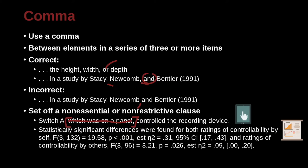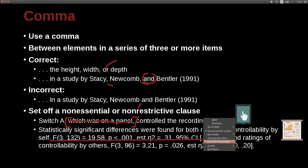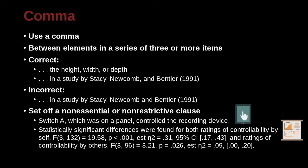Here's another example. Statistically significant differences were found for both ratings of controllability by self — F(3, 132) = 19.58, p < 0.001, and so on — and ratings of controllability by others, and so on. We're putting a comma before the statistical information and a comma after it. At the end, we have a period since that's the end of the sentence, but if we had written more, there would be a comma there too.